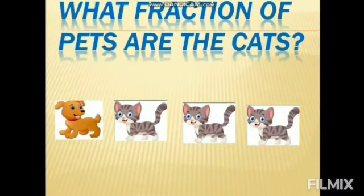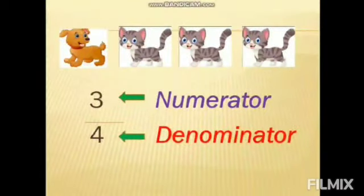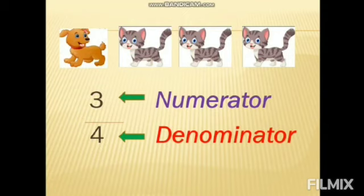Now let's find out what fraction of pets are cats. Here we have four animals — one dog and three cats. The total number of pets is four, so our denominator will be four. The total number of cats is three, so our numerator will be three. The fraction will be three out of four, or we can say three fourths.